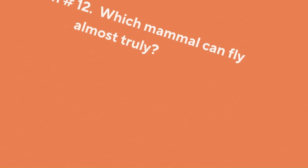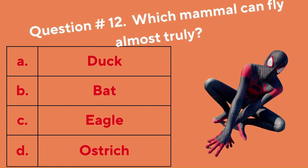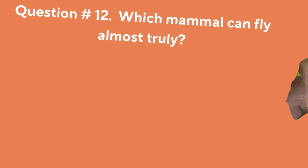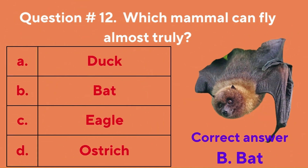Question number twelve: which mammal can truly fly? A. Duck, B. Bat, C. Eagle, D. Ostrich. The correct answer is B. Bat.